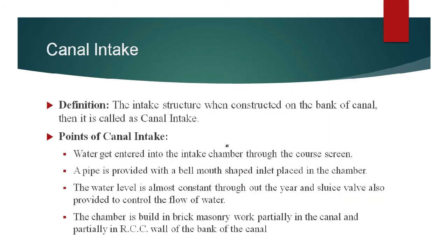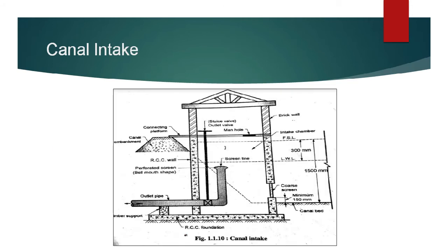The next type of intake structure is canal intake. The intake structure when constructed on the bank of a canal is called as canal intake. Water enters the intake chamber through a coarse screen. A pipe is provided with a bell-mouth shaped inlet placed in the chamber. The water level is almost constant throughout the year. A sluice wall is also provided to control the flow of water, and the chamber is built in brick masonry work.